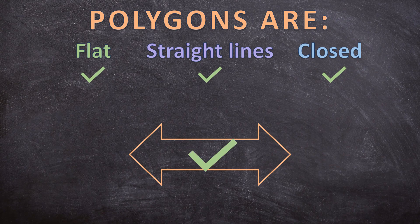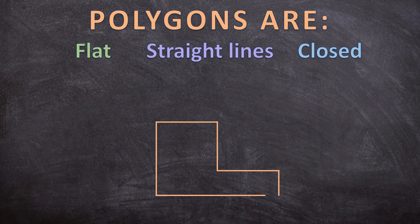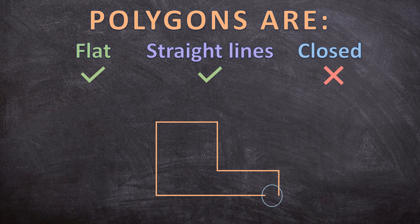And now for our last shape. Is this a flat shape? Yes, it is. Does it only consist out of straight lines? Yes, it does. But is it a closed shape? No, it's not a closed shape — there is an opening. So it's not closed and therefore it is not a polygon.